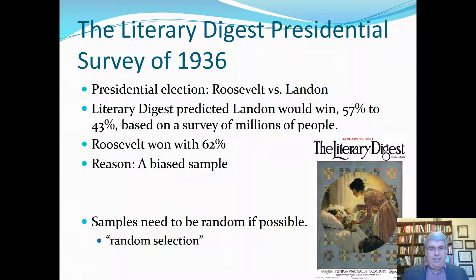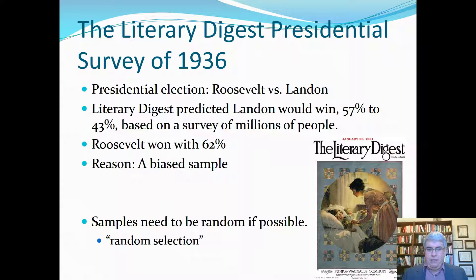It turned out to be exactly the opposite. 62% of the people voted for Roosevelt and only 38% voted for Landon. The reason for this was a biased sample — the Literary Digest appealed to more educated and upper-class people, so it was heavily biased towards Republicans.